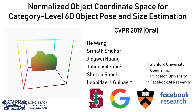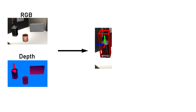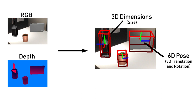Normalized Object Coordinate Space for category-level 6DoF object pose and size estimation. Our goal is to estimate the full 6DoF pose and dimensions of unseen object instances in RGBD images. This category-level 6DoF pose and size estimation problem is challenging because we do not have CAD models for unseen objects.